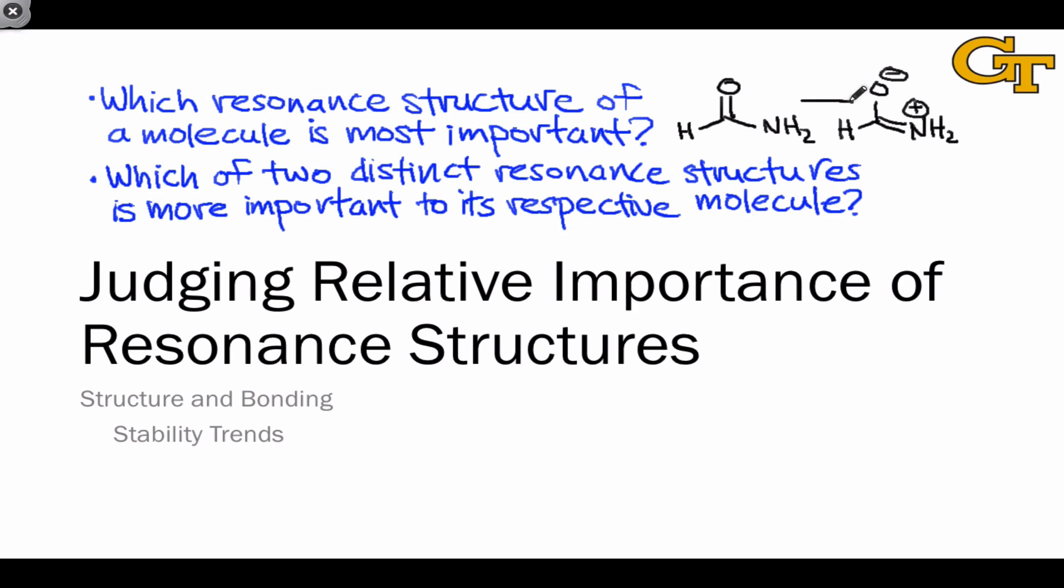Which of these two is most important has deep implications for the nature of the true molecule and the reactivity of formamide. The second question focuses on distinct resonance structures associated with different true molecules. So we could ask, for example, about an oxygen analog of the formamide molecule, formic acid.